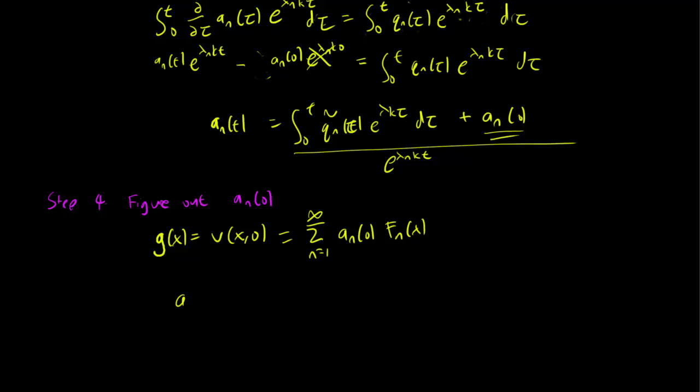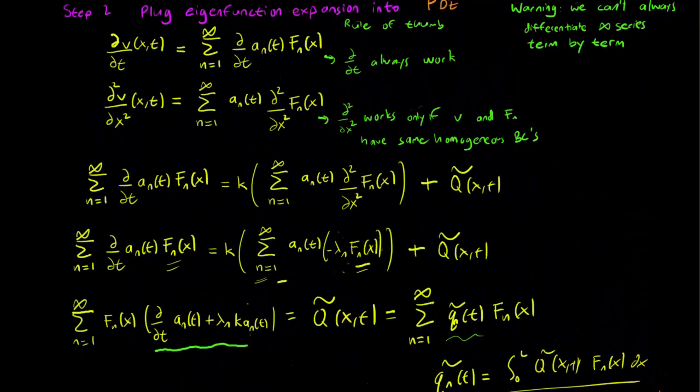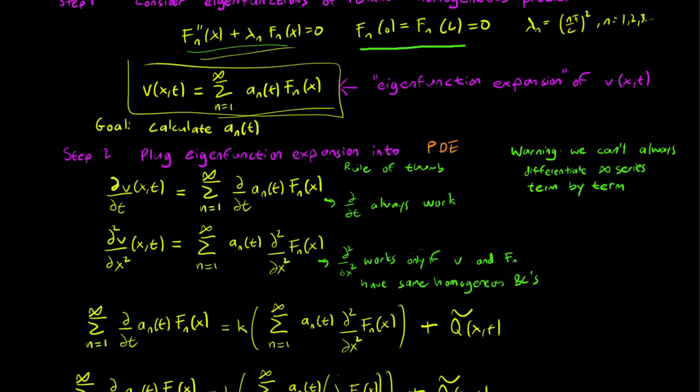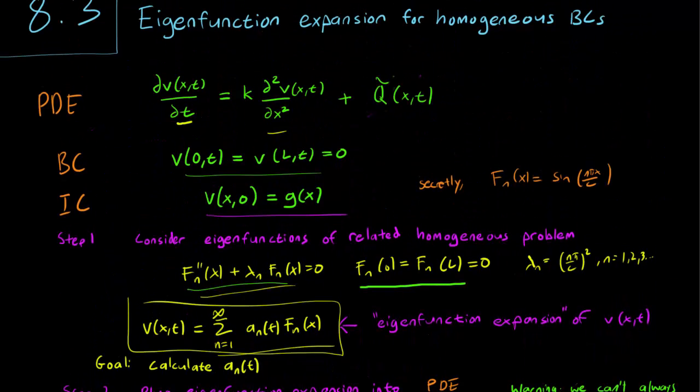But this means that a_n(0) are the Fourier coefficients for g(x). And we are done. We've figured out the way to calculate a_n(t). And therefore, this gives us a solution for V(x,t) that solves our partial differential equation problem.